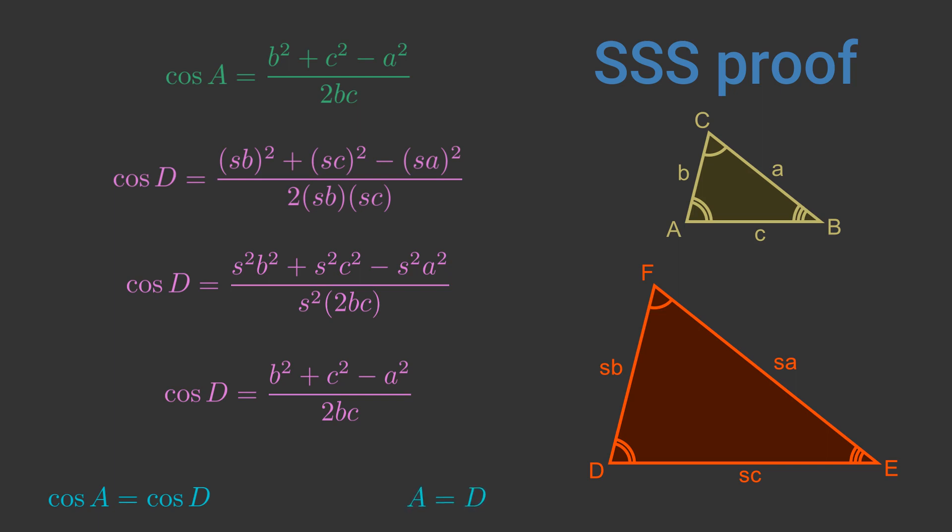We have to be a bit careful with this statement, but we will assume it's true for now. We'll get back to that in a minute. We can use the same steps to prove that angle B equals angle E and angle C equals angle F. This proves that all the corresponding angles of the two triangles are equal, which proves the SSS rule.